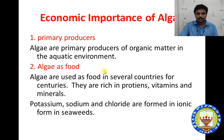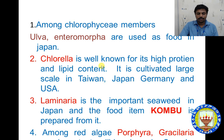First, primary producers: these algae members are primary producers of organic matter in the aquatic environment. Algae are used as food in several countries for centuries. They are rich in proteins, vitamins and minerals — potassium, sodium, chloride — present in ionic form in seaweeds. Among the Chlorophyceae members, Ulva and Enteromorpha are used as food in Japan. In Japan, Laminaria is an important seaweed food item, and kombu is prepared from it in several dishes.